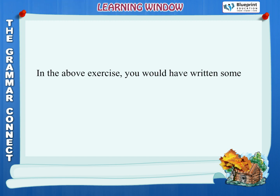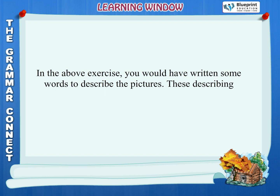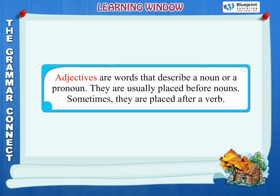Learning window. In the above exercise, you would have written some words to describe the pictures. These describing words are called adjectives. Adjectives are words that describe a noun or a pronoun. They are usually placed before nouns. Sometimes they are placed after a verb.